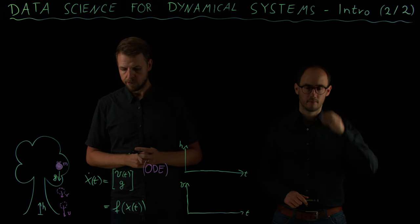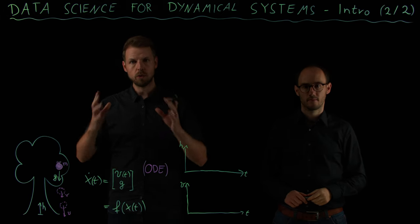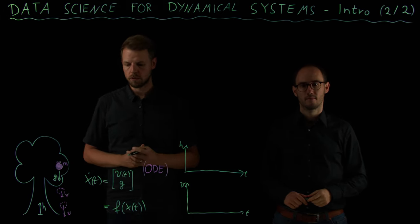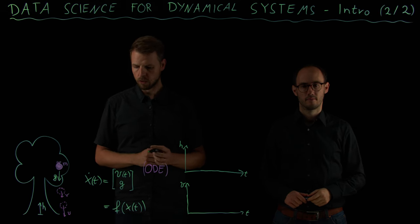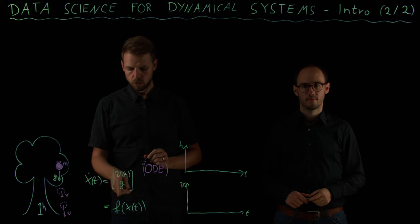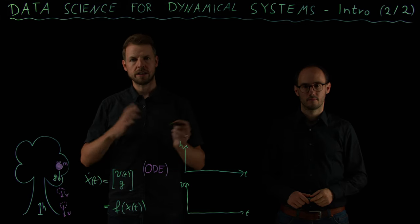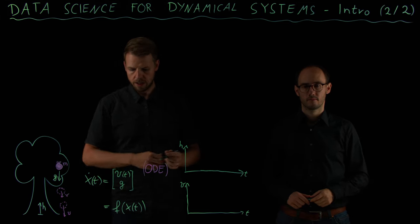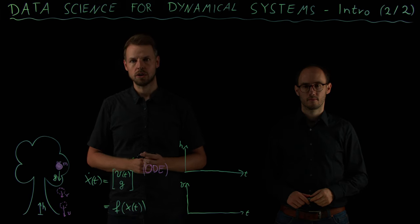The rule to describe how the system evolves over time is given by this ODE, which means x dot, the time derivative of x, is equal to f of x, which is a right hand side that can in general be an arbitrary nonlinear function of the state.